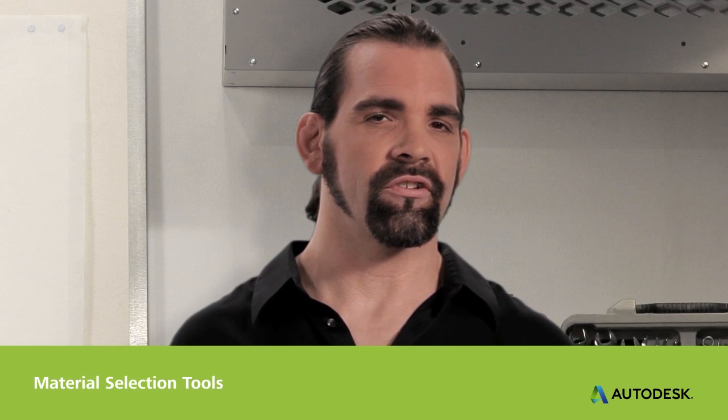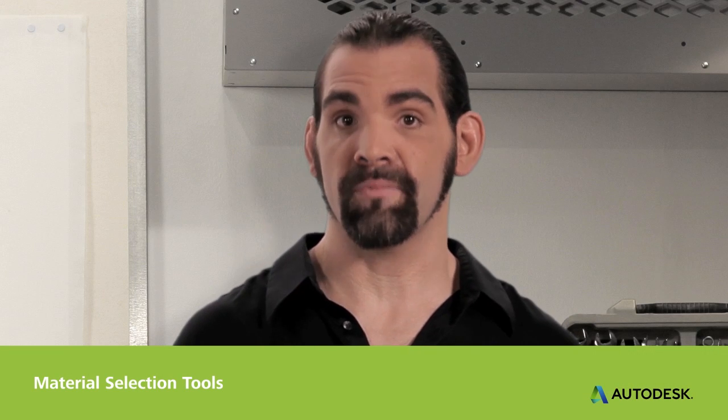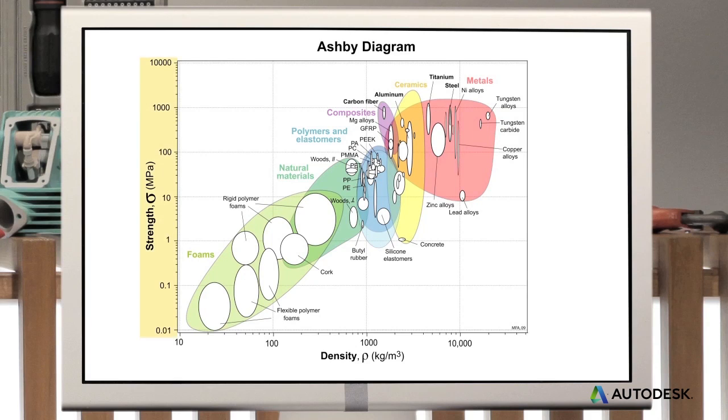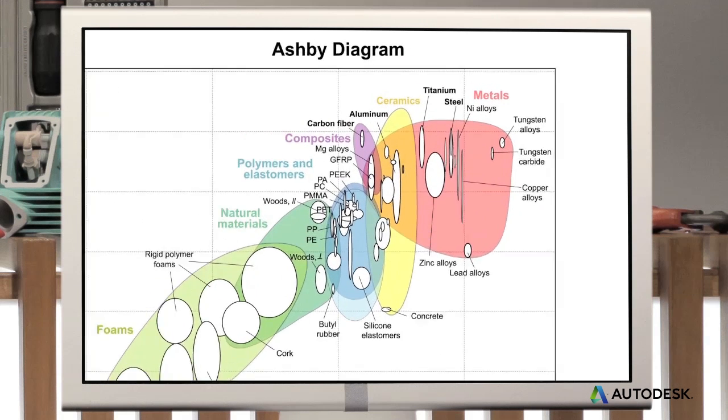When you graph materials based on their properties, it's called an Ashby diagram. Here's one of strength versus density to help us find strong and light materials for the chassis. Here's steel and here's aluminum. Now let's see what other materials might work.